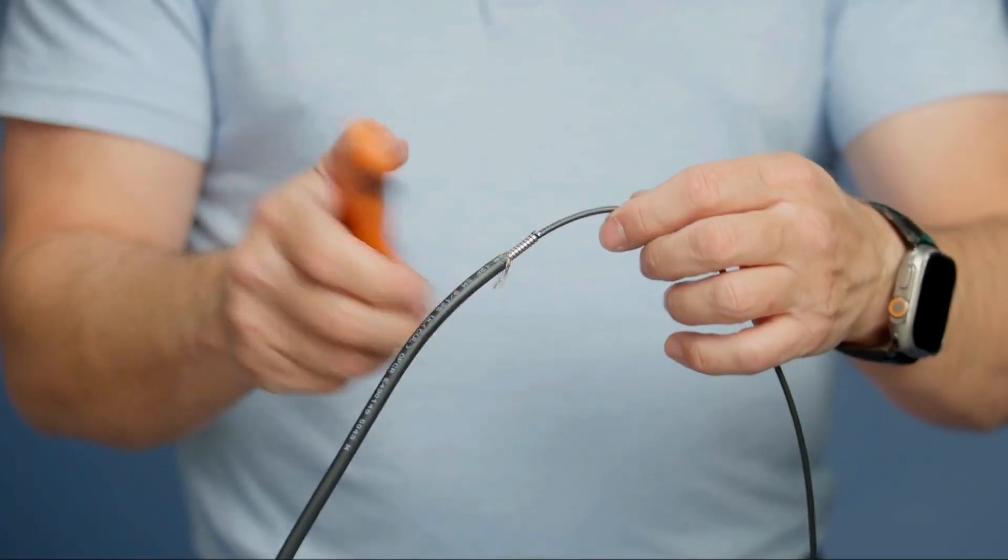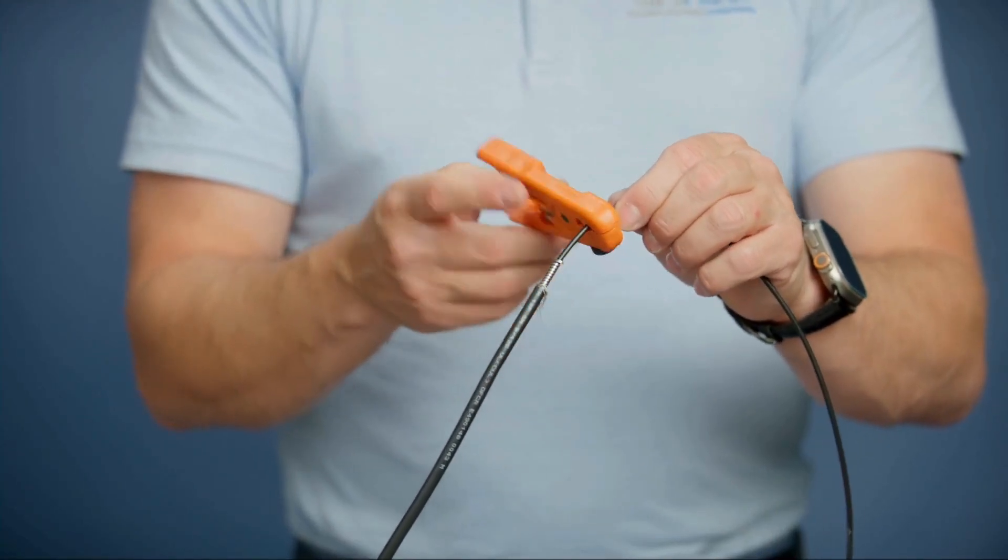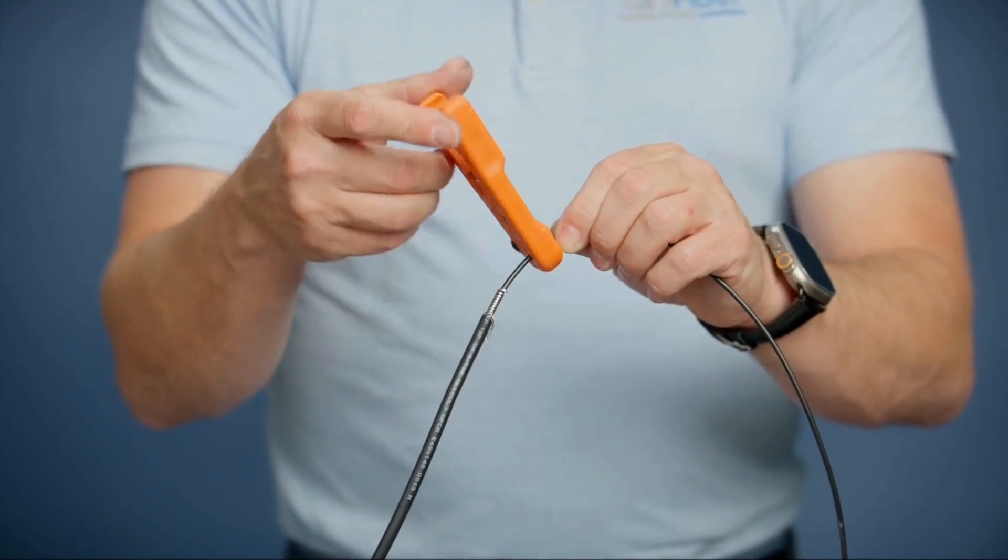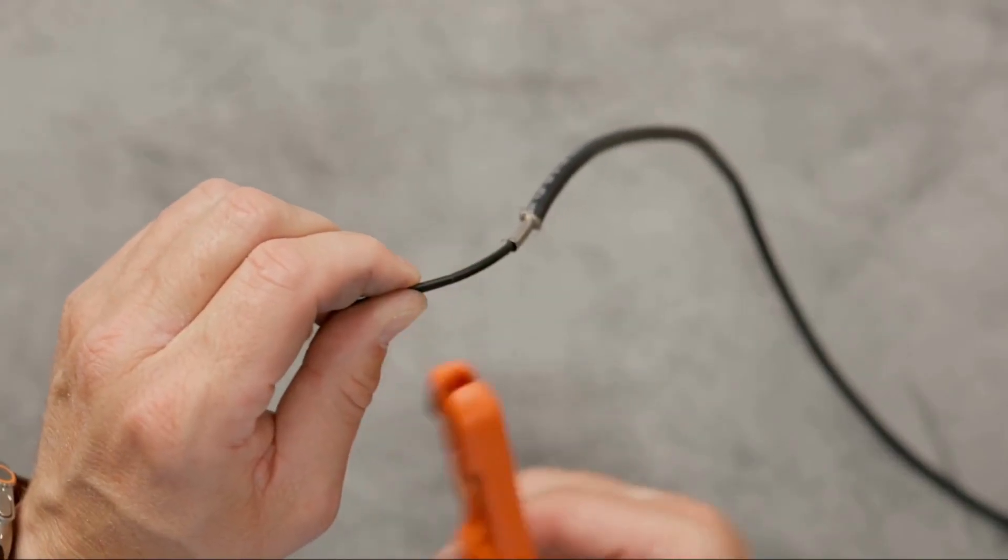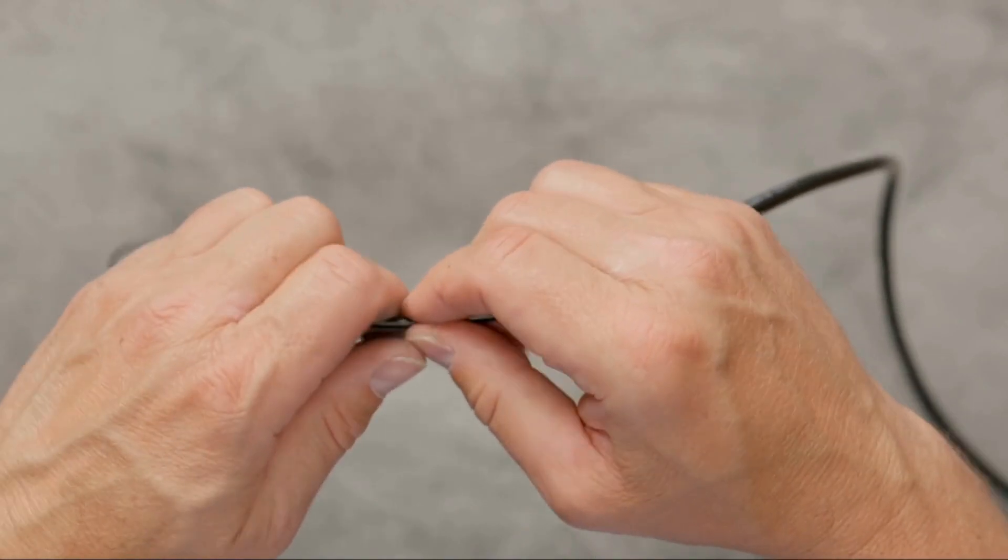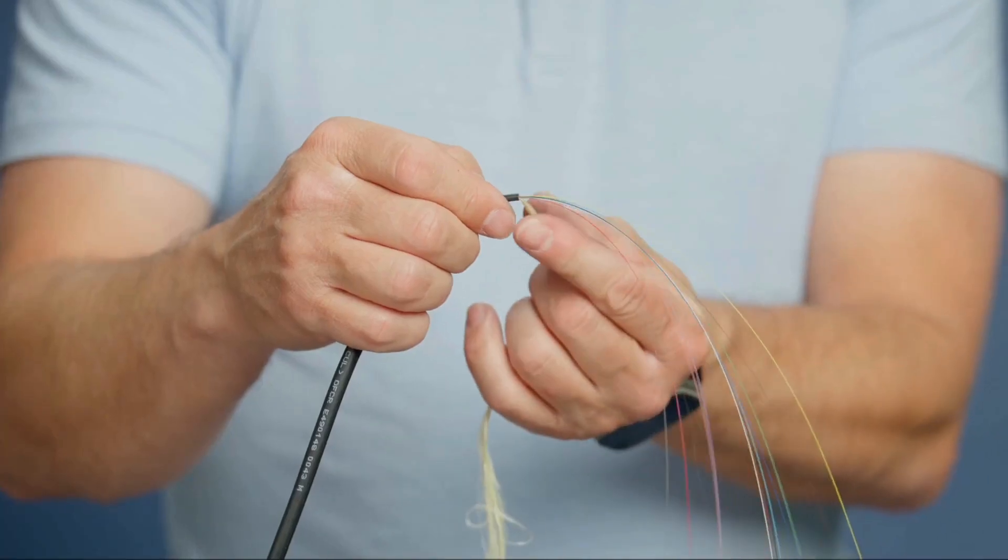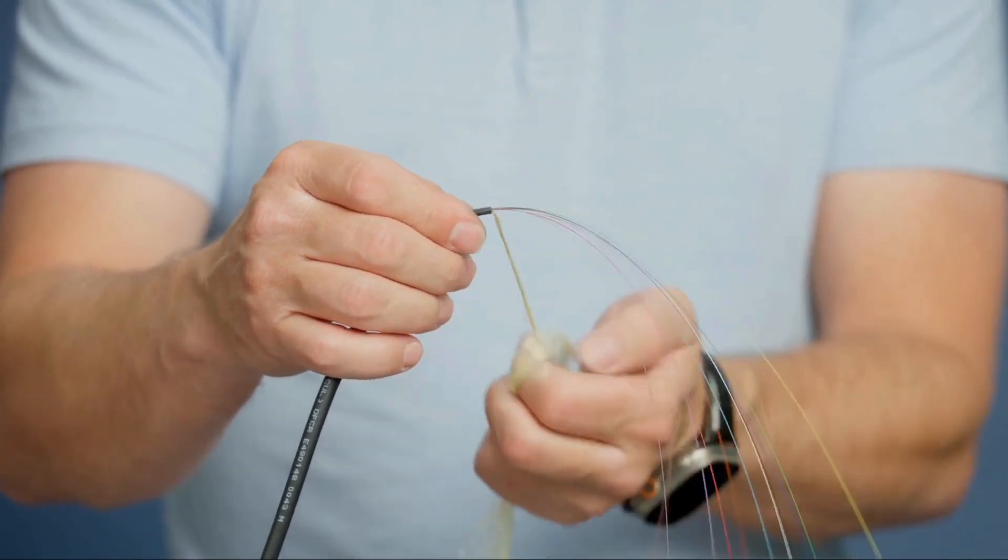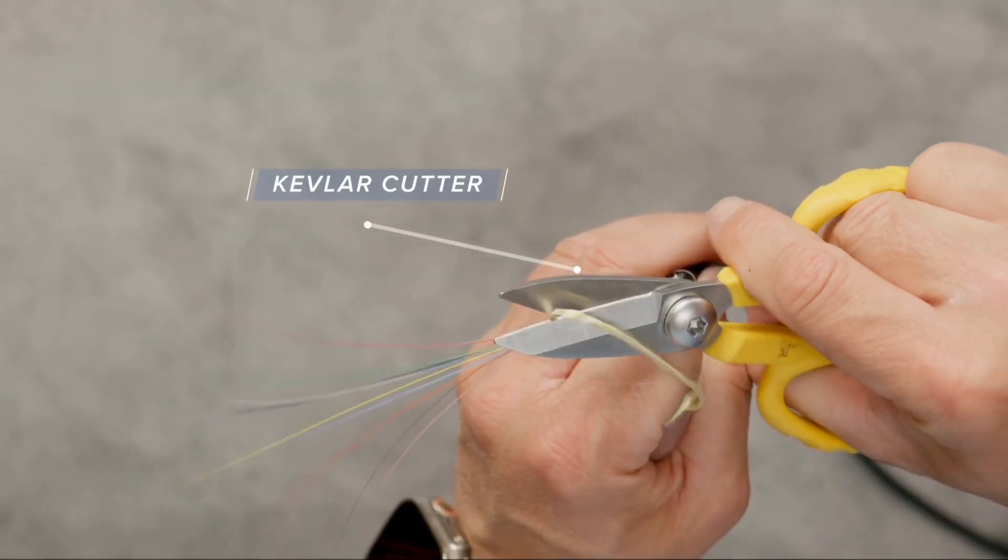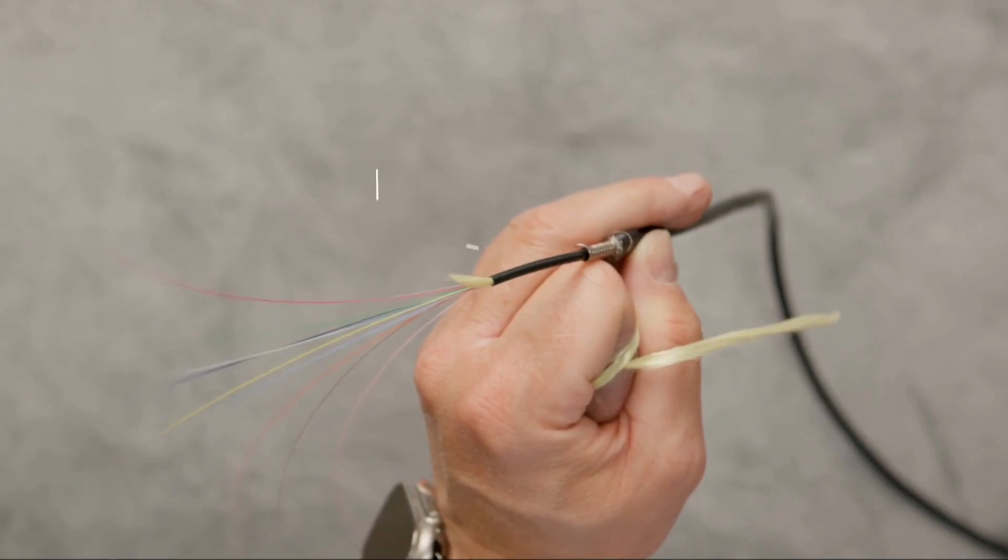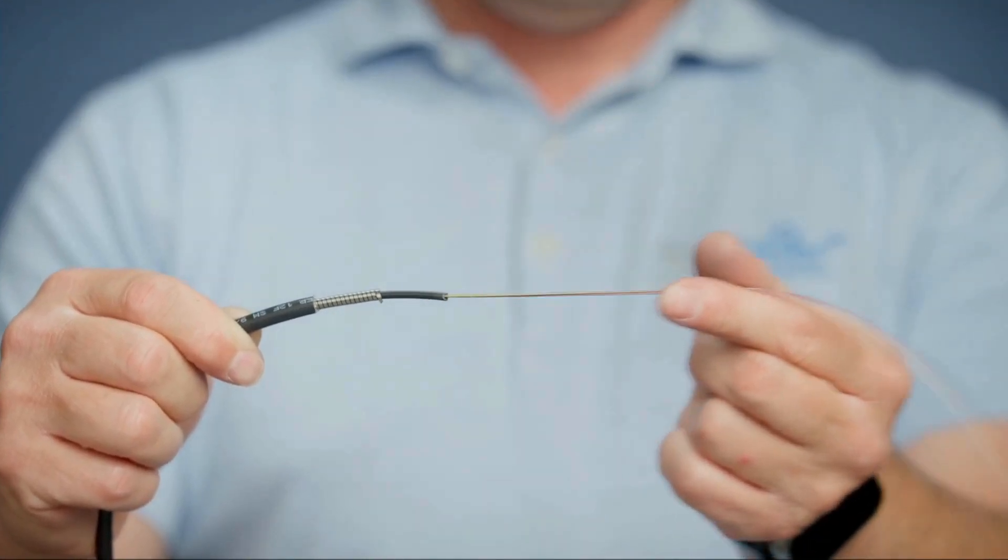Again, take your cable jacket stripper and put it over the second outer jacket. Rotate it 360 degrees several times, scoring the outer jacket, then remove it. Next, separate the Kevlar from the loose tube fiber. Take your Kevlar cutters and cut off the Kevlar. Next we'll prep the cable for splicing.